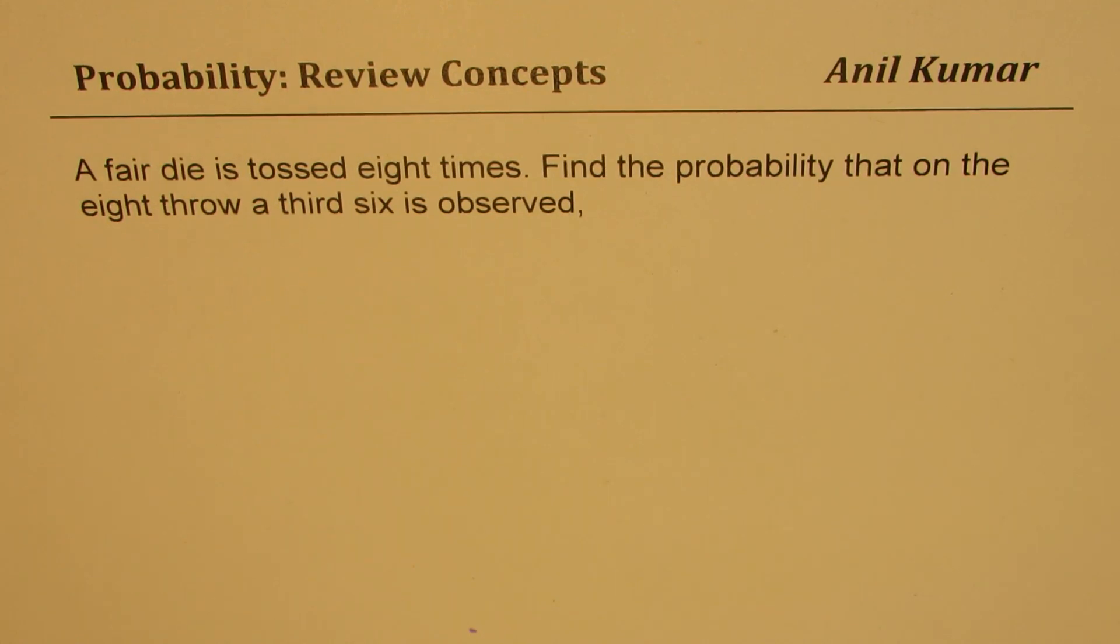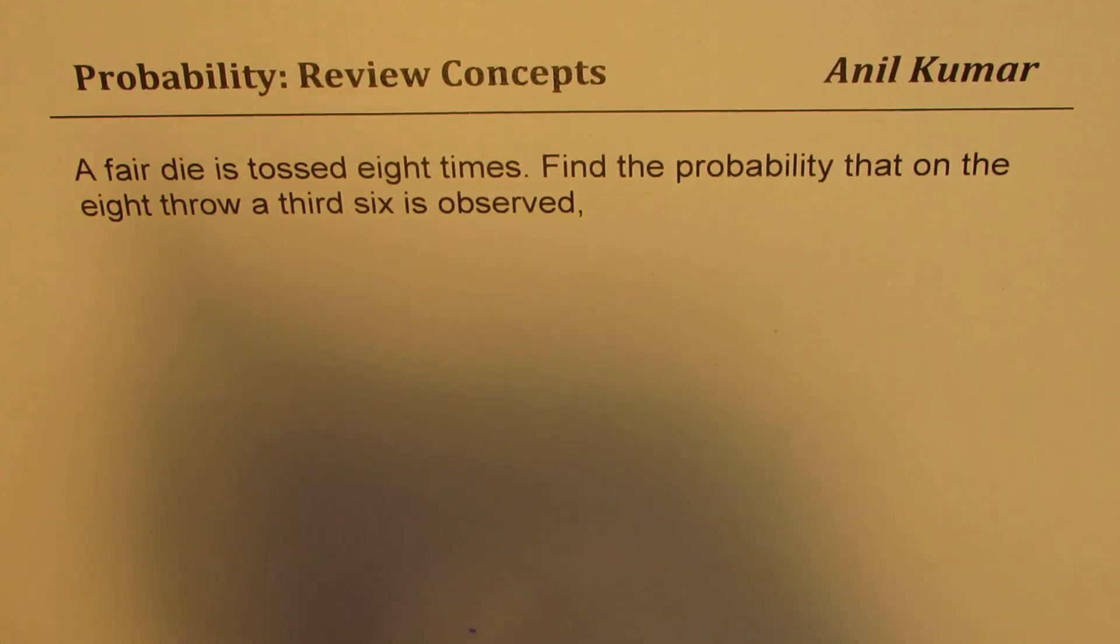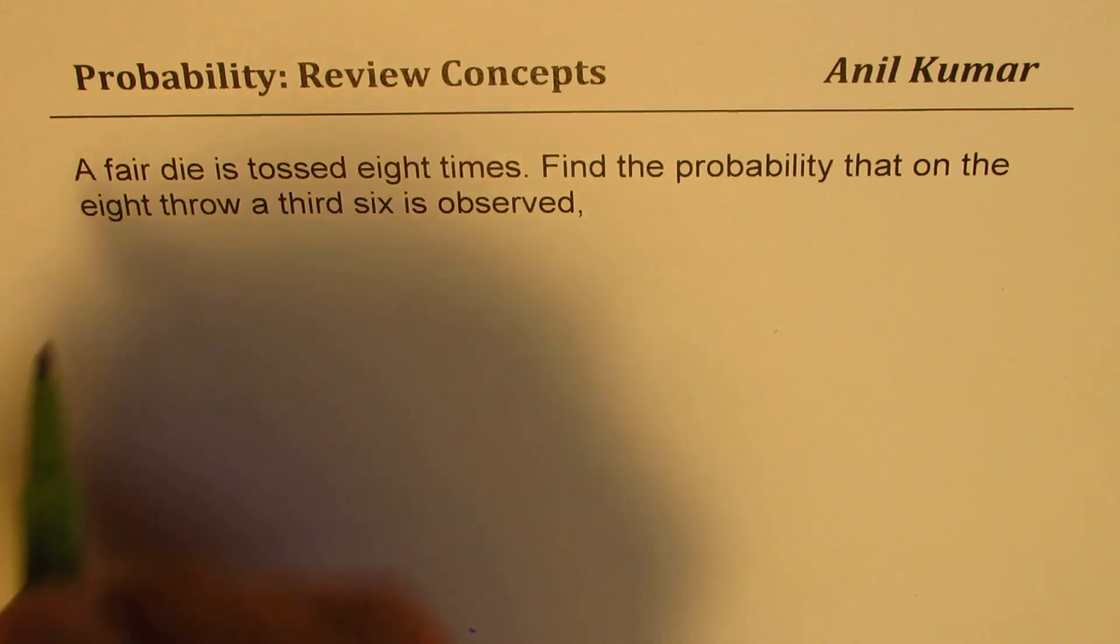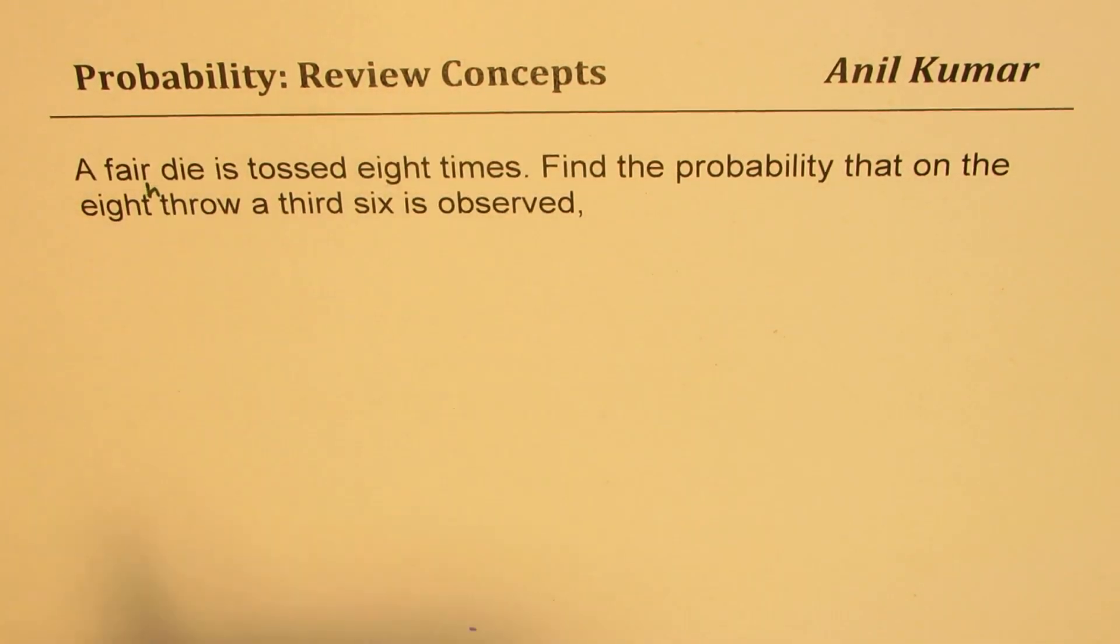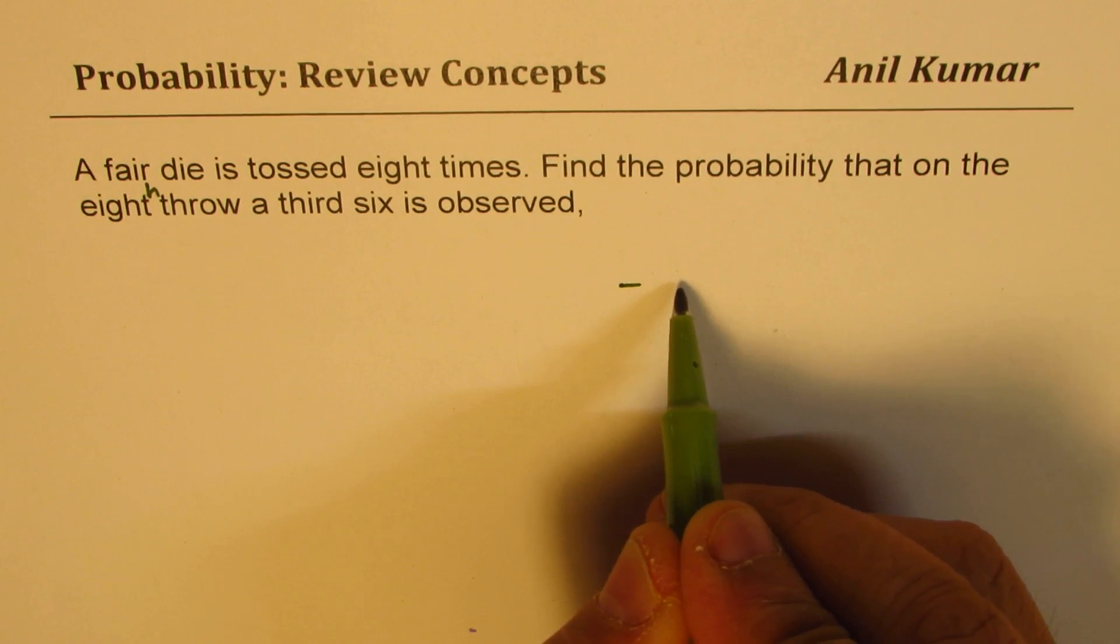The question here is: a fair die is tossed eight times. Find the probability that on the eighth throw, a third six is observed.